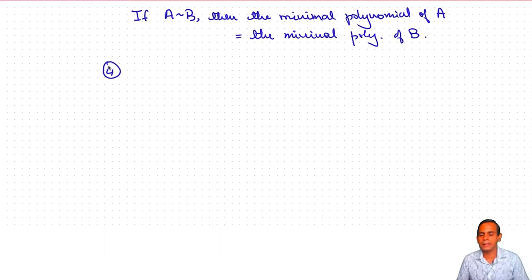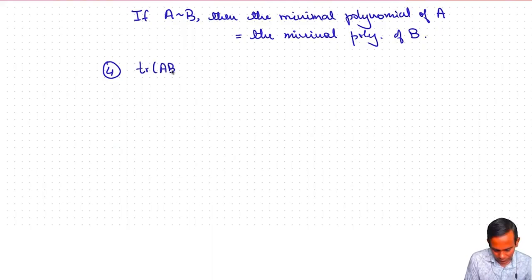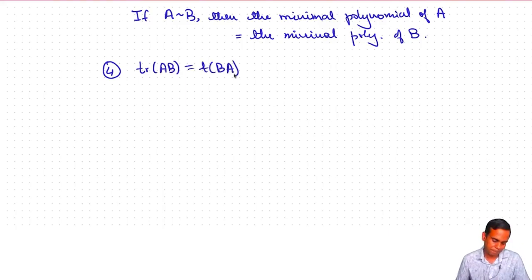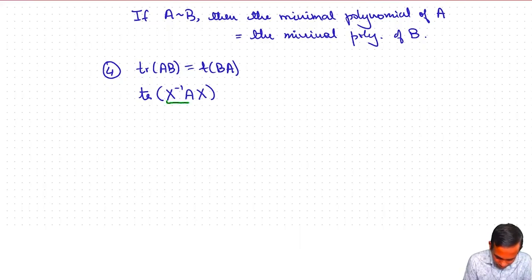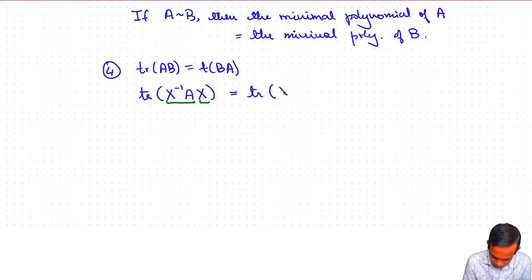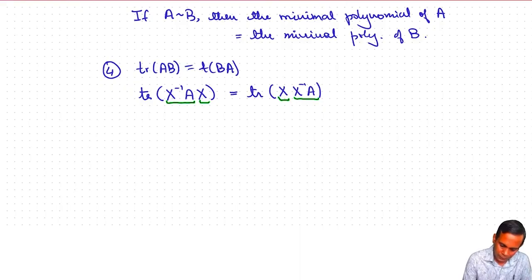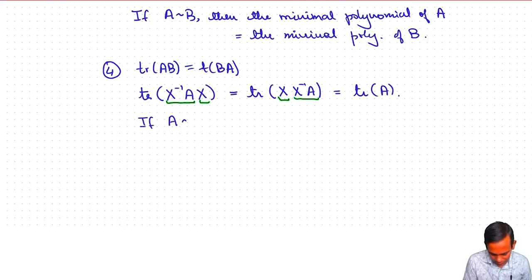There are more properties invariant under similarity. For trace: we know that trace(AB) = trace(BA) for any two square matrices A and B. So trace(X⁻¹AX) — using trace(AB) = trace(BA) with the first matrix being X⁻¹A and the second being X — equals trace(X · X⁻¹A) = trace(A). Therefore if A is similar to B, then trace(A) = trace(B).